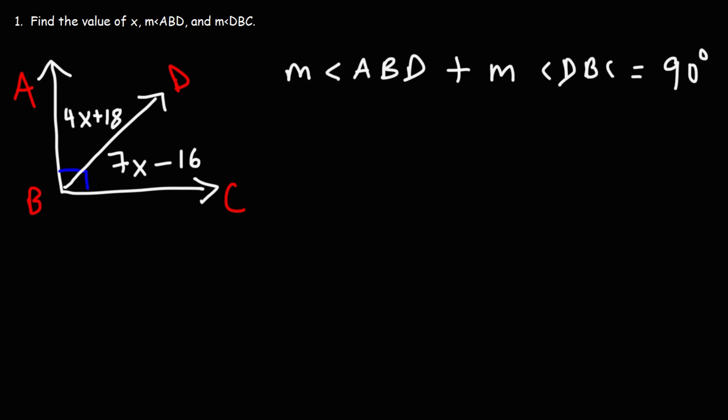Now, angle ABD is equal to 4X plus 18. And for DBC, it's associated with 7X minus 16. And that's going to add up to 90. So let's calculate X.